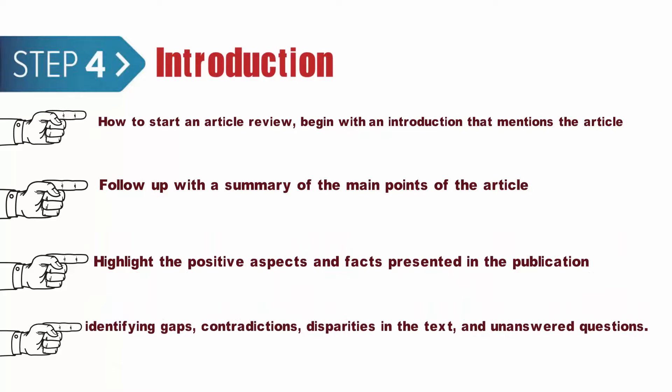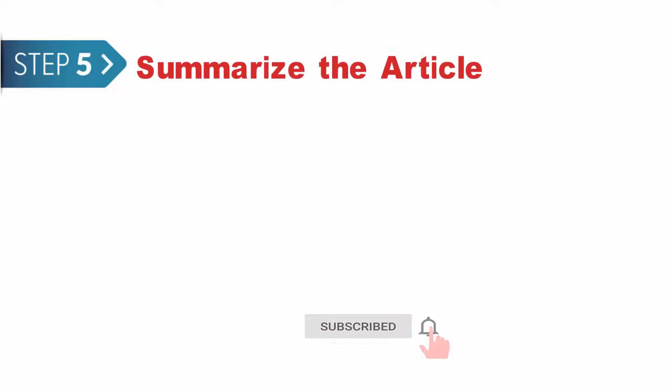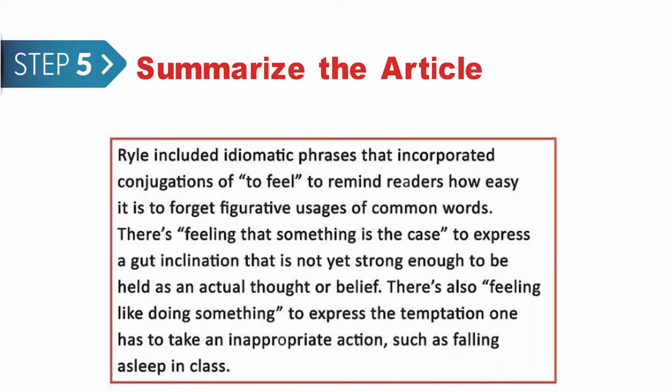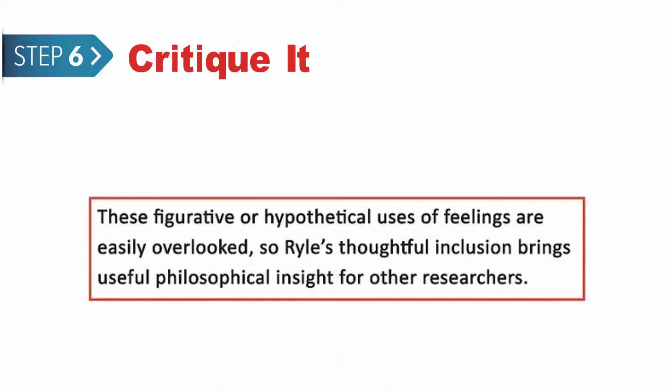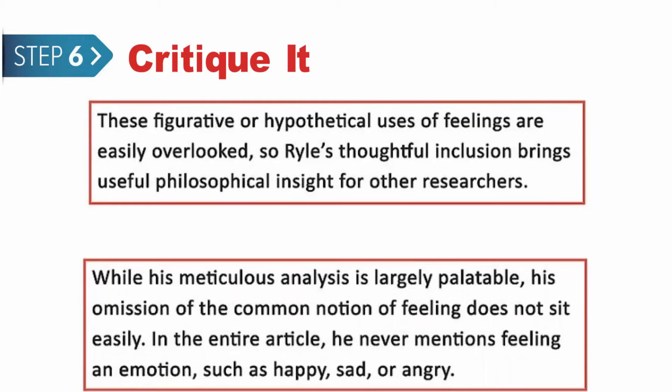Step 5: Summarize the article. Make a summary of the article by revisiting what the author has written about. Note any relevant facts and findings from the article, and include the author's conclusions in this section. Step 6: Critique it. Present the strengths and weaknesses you have found in the publication. Highlight the knowledge that the author has contributed to the field, and write about any gaps or contradictions you have found in the article.